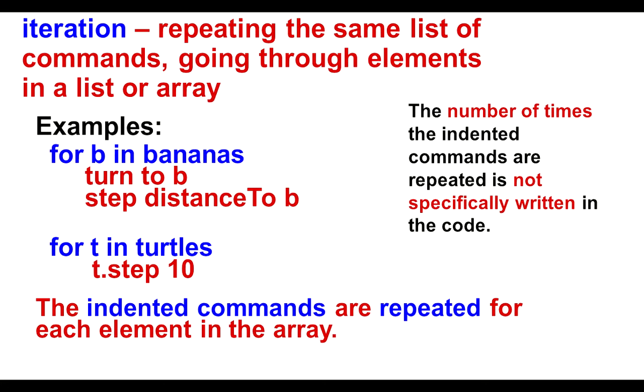An iteration is a repetition. You're going through the same list of commands for each of the elements in a list or array. So for b in bananas, for t in turtles, the indented commands are being done. But we do not have a specific number of times that's written down to say how many times the monkey is turning and stepping. We don't know this. All we know is that all the turning and stepping ends once every b in bananas has been gone through.